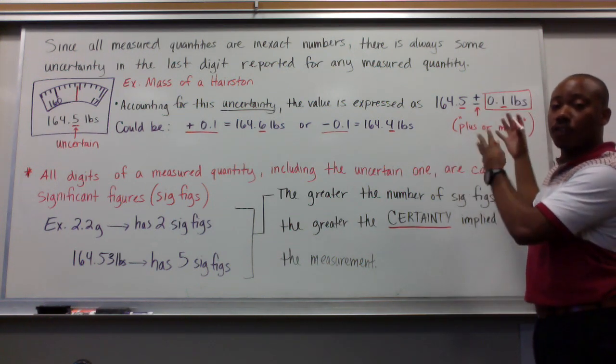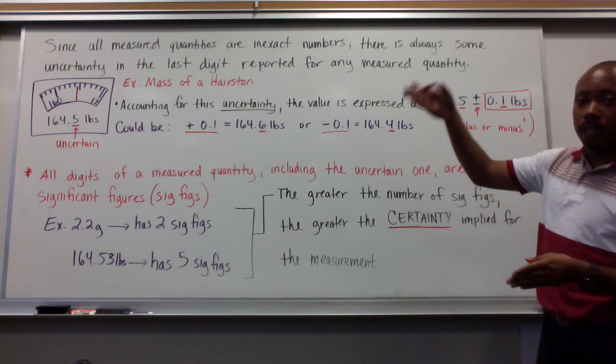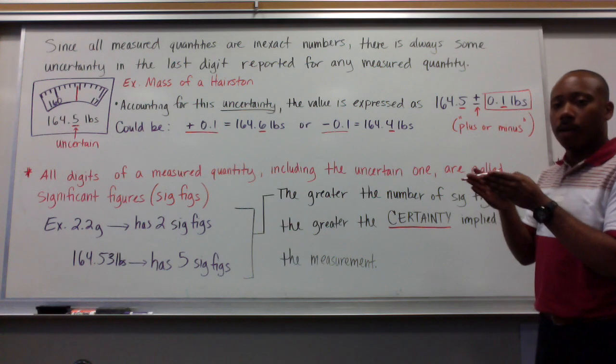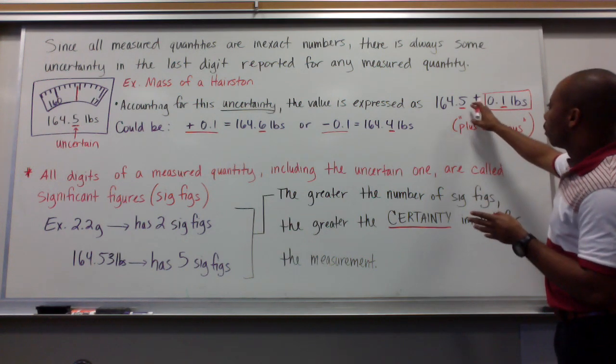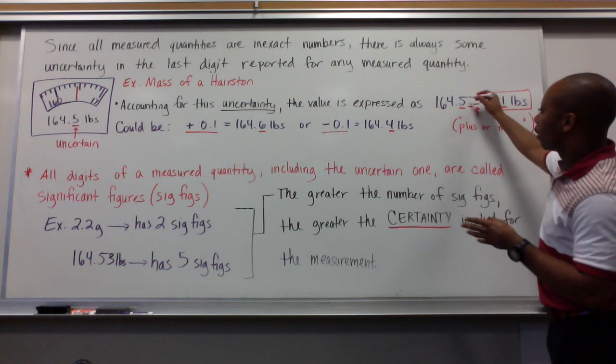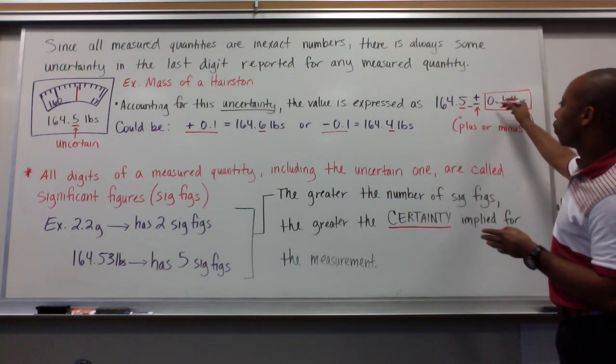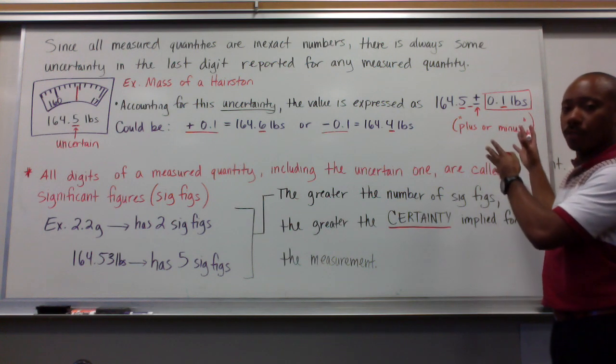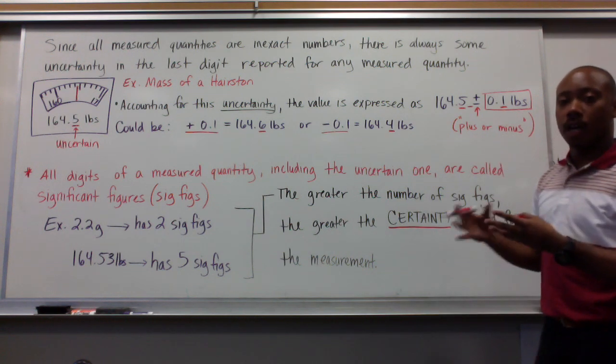If I approximated out to the 100th place, if I had more lines there on my scale that I could actually make a more precise measurement, then it would be plus or minus 0.01 pounds. And I would approximate that value, being plus or minus to the 100th place.